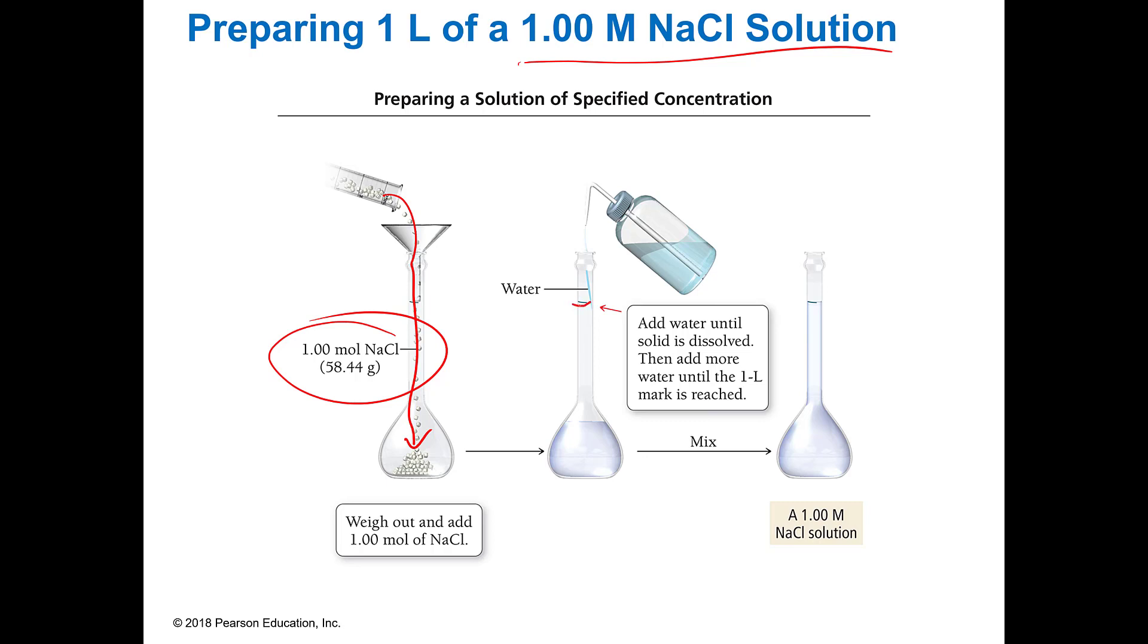I can put my 58.44 grams of sodium chloride, which is one mole, and then there's a little mark here on this, and this is called a volumetric flask. In this volumetric flask there's this line and this line is exactly one liter. You fill it up with water after you put the solids in there. The water goes in until you get to that line, and then you have exactly 58.44 grams of sodium chloride in one liter, otherwise known as one mole of sodium chloride in one liter, otherwise known as one molar sodium chloride.